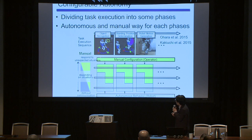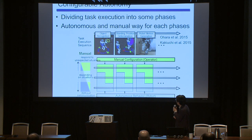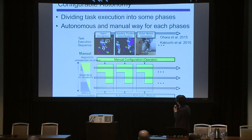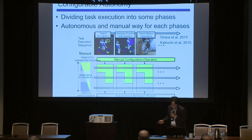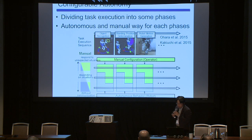This is our system of configurable autonomy. There is a fully manual configuration and a fully autonomous robot behavior mode, and we change between them depending on the situation. For each task, we adapt the method of sharing autonomous robot behavior and manual operator adjustment.